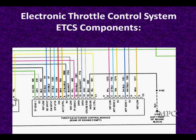We're going to be talking about the electronic throttle control system components. What you're looking at now is a throttle actuator control module from a GM vehicle. We're going to be talking about external modules and systems that don't have external modules.